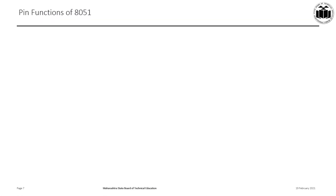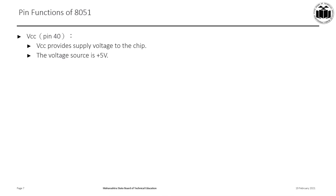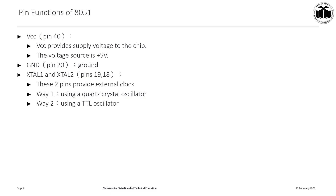Let's discuss the pin functions of the 8051 microcontroller in detail. VCC, which is pin number 40, provides supply voltage to the chip at +5 volts. Pin number 20 is the ground pin connected to ground. The 8051 has an on-chip oscillator but requires an external clock to run it — unless a clock is provided, it cannot function.